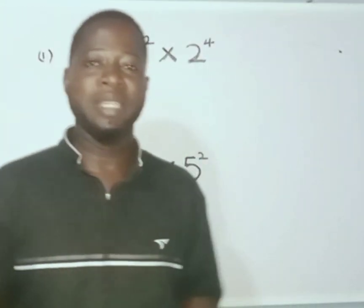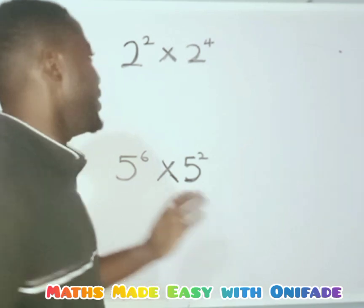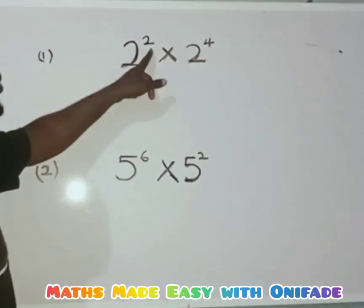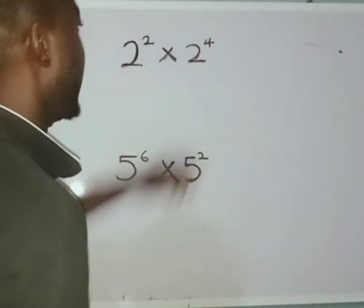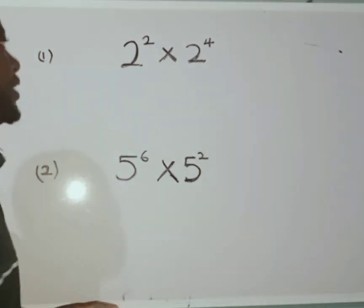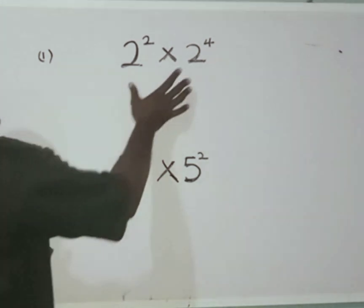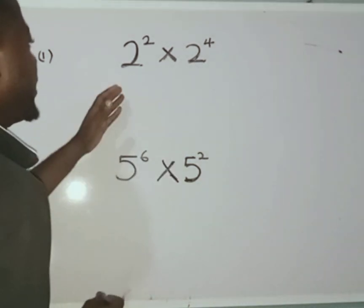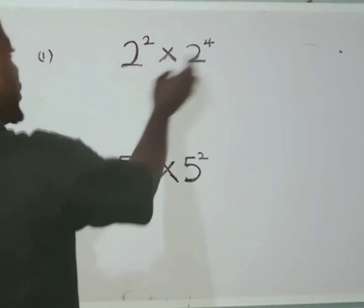Hello wonderful viewers, welcome to Maths Made Easy with Onifade. In today's class we want to solve 2 raised to power 2 multiplied by 2 raised to power 4. According to law of indices, if you have to multiply numbers with the same base, as you can see this question has the same base, this one has two, this one has two.